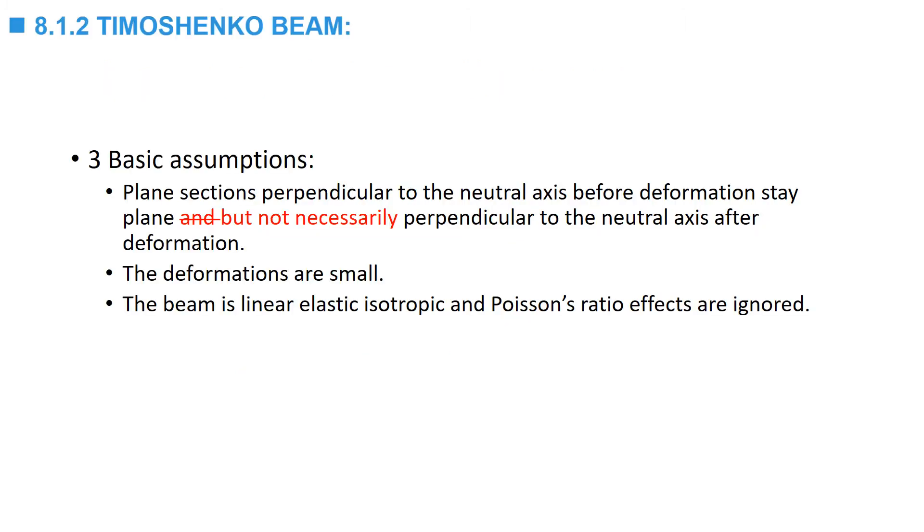The same assumptions for the Euler-Bernoulli beam are used for the Timoshenko beam except that the plane sections that are perpendicular to the neutral axis of the beam are forced to stay plain but not necessarily perpendicular to the neutral axis. In the formulation here, we will assume small deformations and linear elastic isotropic materials ignoring Poisson's ratio.